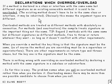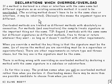If a method is declared in a class or interface with the same name but a different signature as an existing accessible method, it's said to be overloaded. That's what overloading means. The existing method doesn't have to be in the same class or interface — it can be inherited.